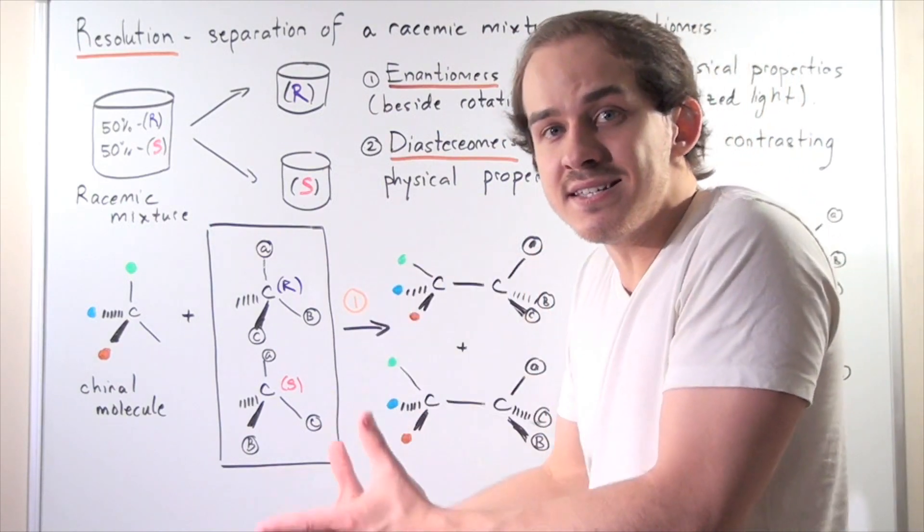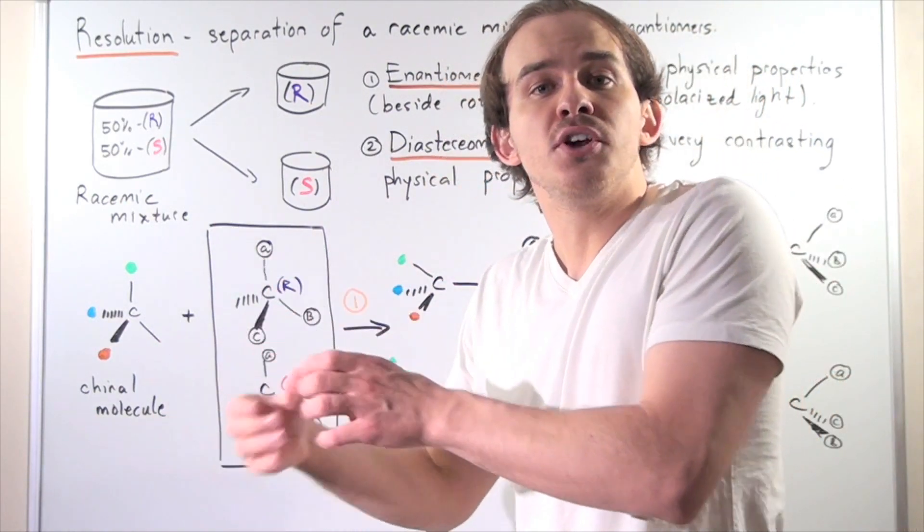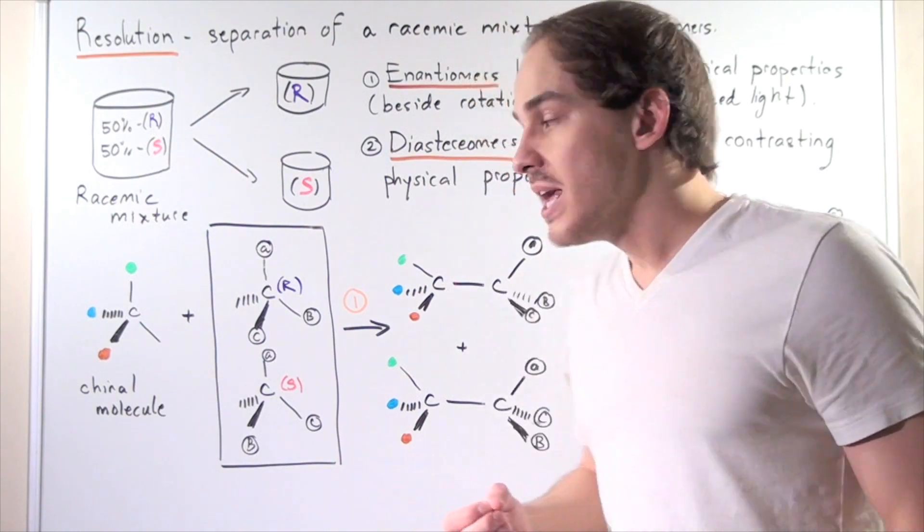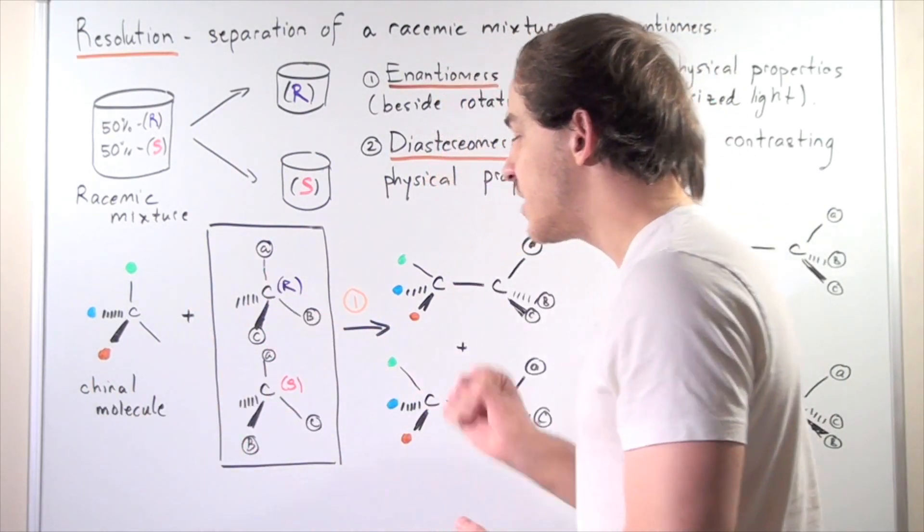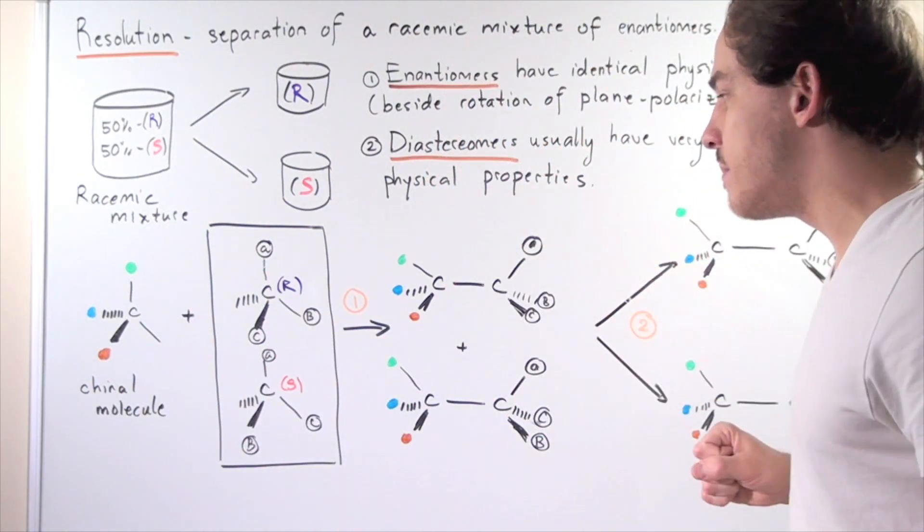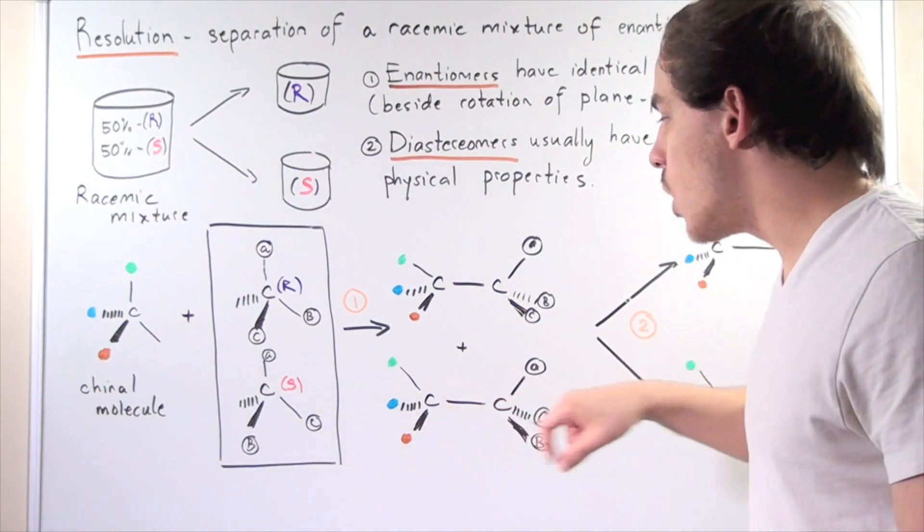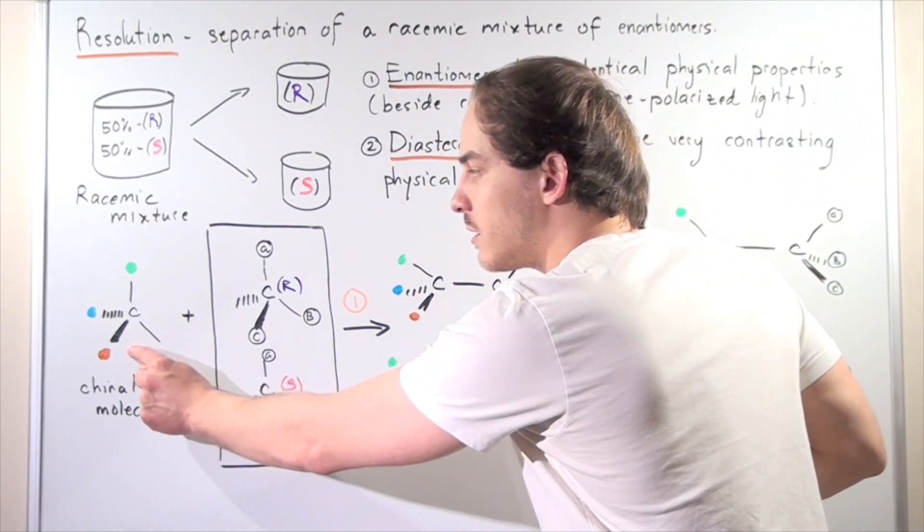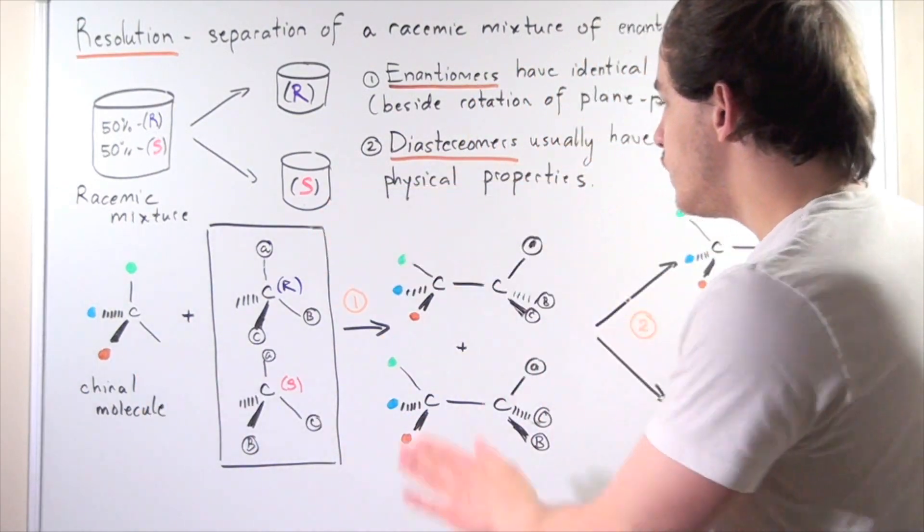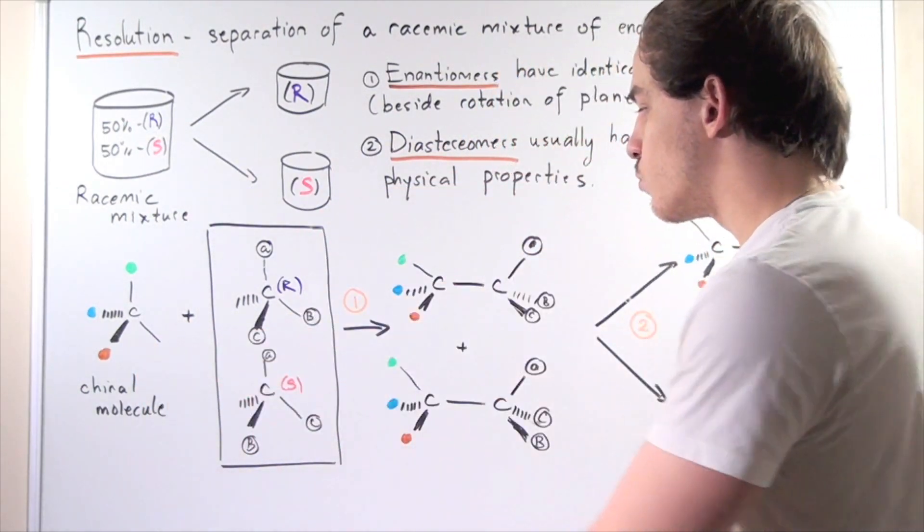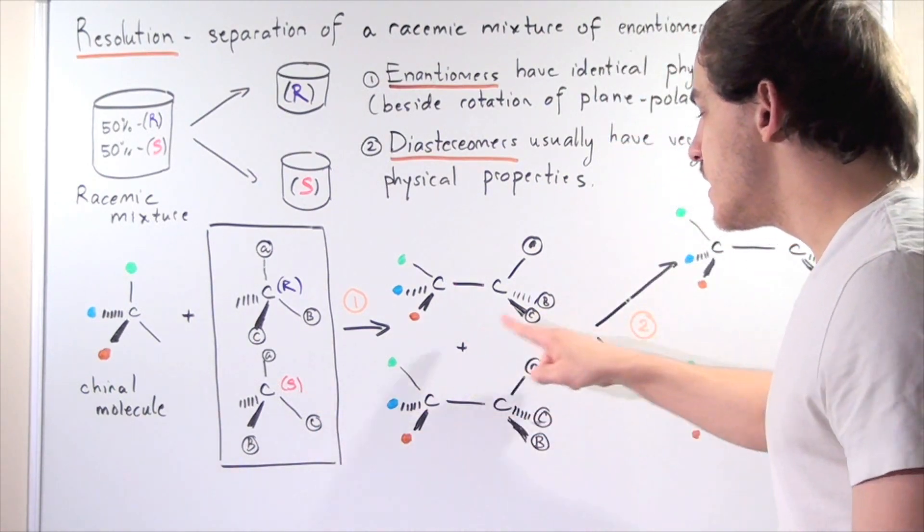We mix it or react it with some other chiral molecule. When these react, they will form two different compounds. When this chiral molecule reacts with the R, we form this compound. When this molecule reacts with the S, we form this compound.